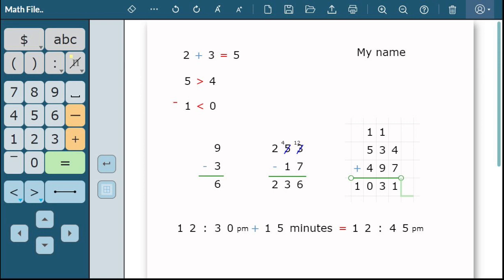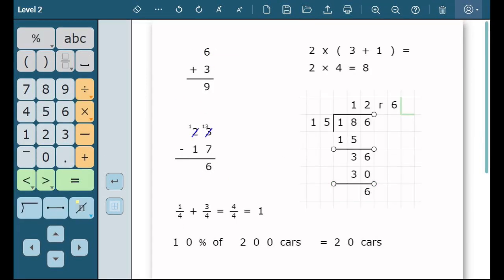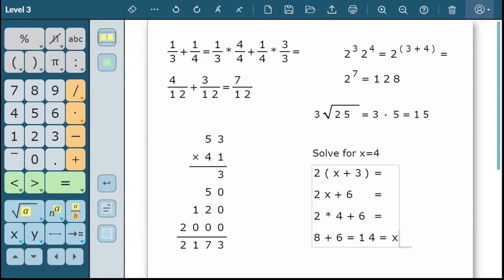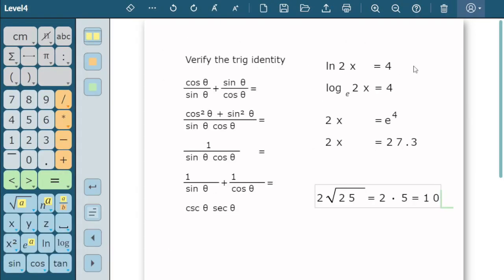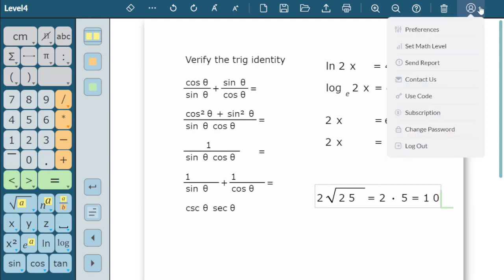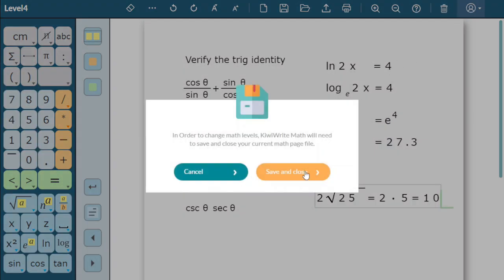Math levels 1 and 2 use a grid layout to line up rows and columns for arithmetic problems. Levels 3 and 4 provide access to fractions and higher symbols. Select the level based on the type of math problems you want to do. To switch levels, click the profile icon on the main math page and select Set Math Level.